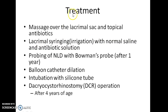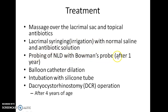How do you treat a case of congenital dacryocystitis? Massage over the lacrimal sac and topical antibiotics are the treatment of choice. Lacrimal syringing — that is, irrigation with normal saline and antibiotic solution — can be tried. Probing of the nasolacrimal duct with Bowman's probe can be done after 1 year of age.